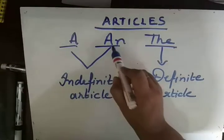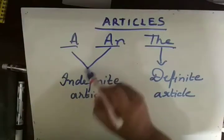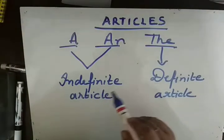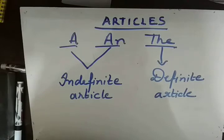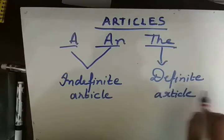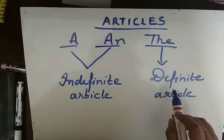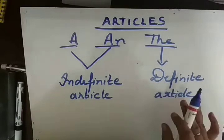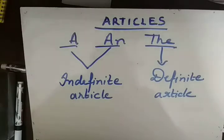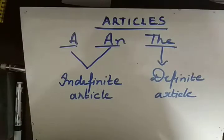A or AN — these are indefinite articles. They are called indefinite because when we use them before something, it is not necessary that we already know about that thing. The article THE is a definite article. We use THE only when we already know about the thing being referred to. So let's start with the definition.